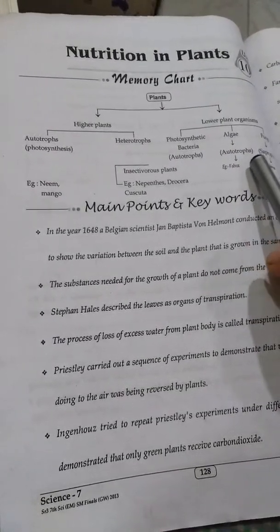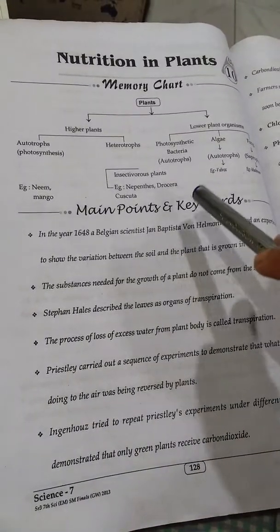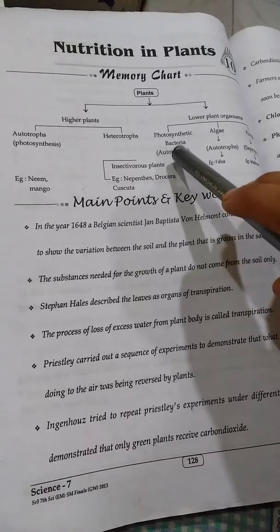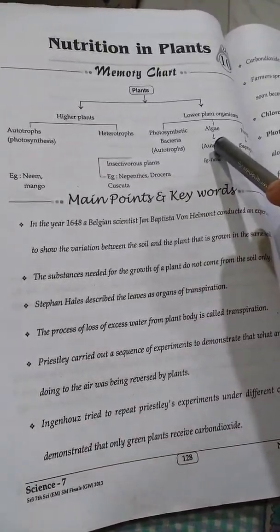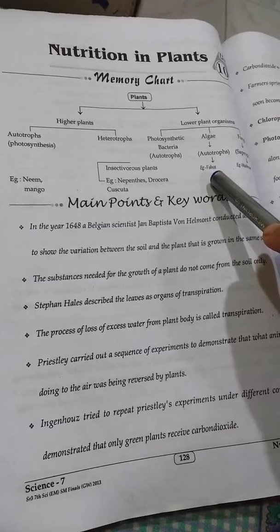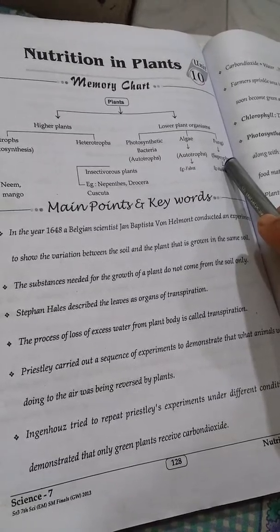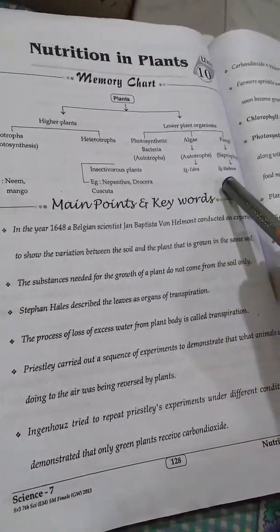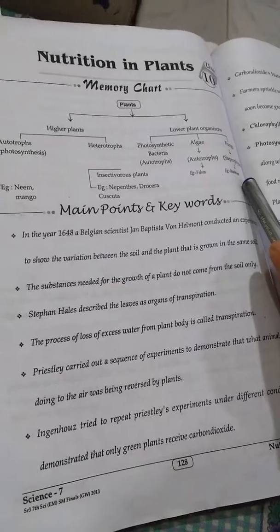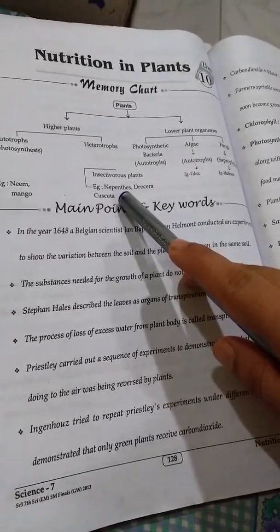Such organisms include fungi, algae, and bacteria. Photosynthetic bacteria present in photosynthetic plants are called autotrophs. Algae are also present in autotrophic plants — example: Volvox. Fungi grow in dead and decaying matter, like mushrooms. Mushrooms are called saprophyte plants. Insectivorous plants eat insects; examples are Nepenthes, Drosera, and Cuscuta.